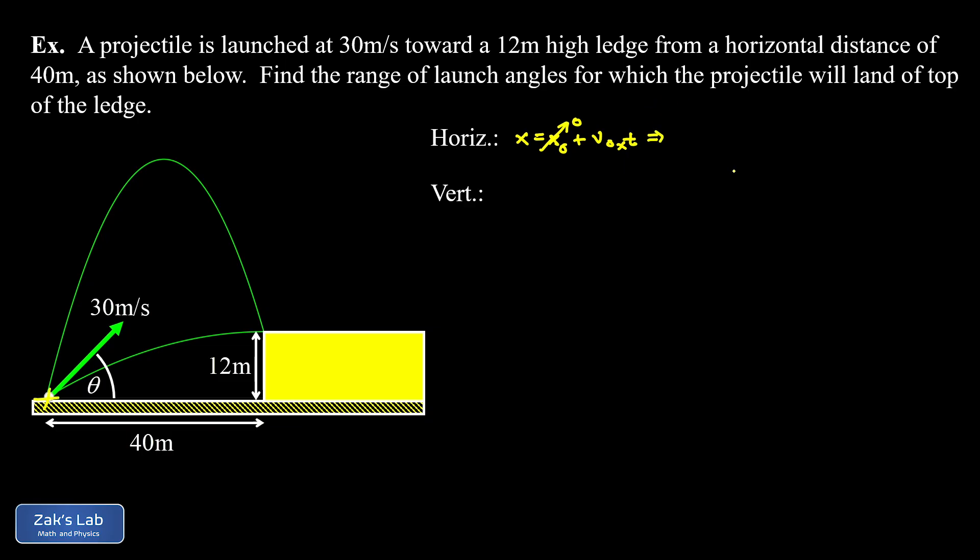We're trying to find the launch angles that put the projectile right at that upper left corner of the ledge. That's a final X coordinate of 40 meters. So I have 40 = V₀ₓt.